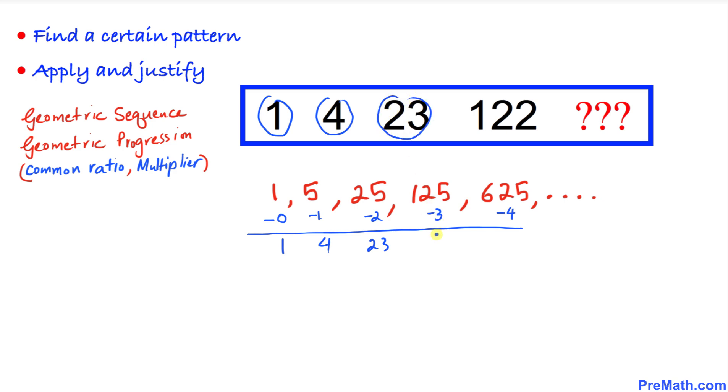125 take away 3 is 122, which is the same number. That means 625 minus 4 is going to be 621. So the number at this spot is going to be 621.